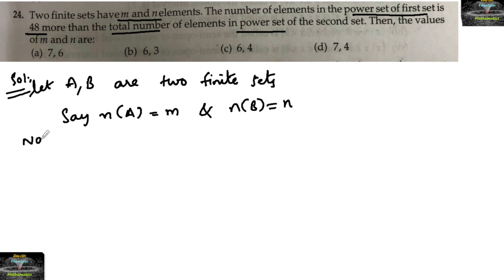The number of elements in the power set of set A equals the total number of subsets, which is 2^m. The number of elements in the power set of set B is 2^n.